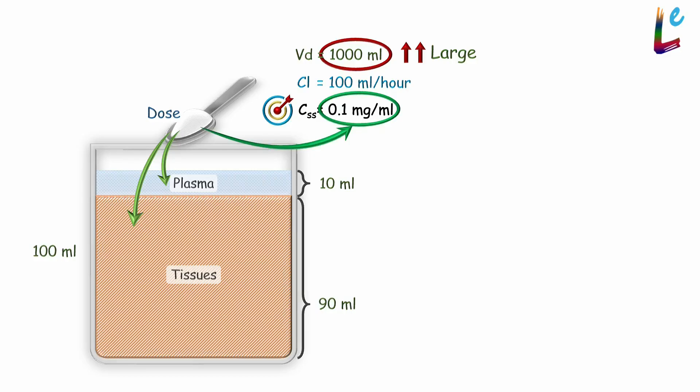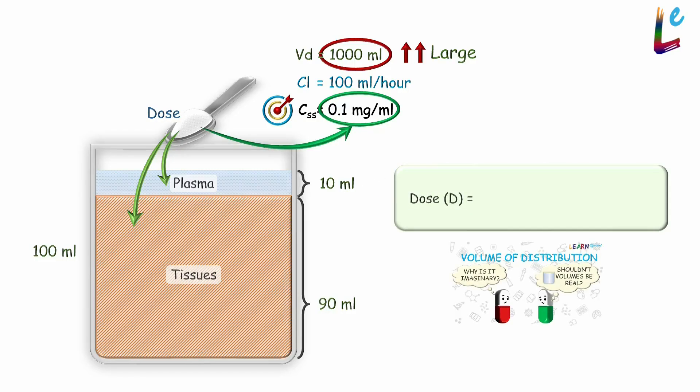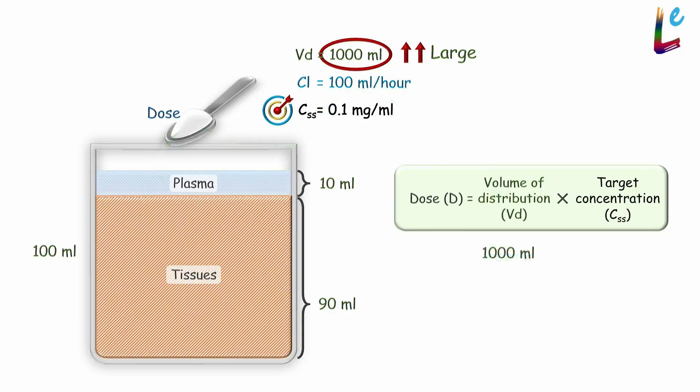We have already seen the equation to calculate this dose in the video on volume of distribution. Dose equals volume of distribution multiplied by target concentration. We know that VD is 1000ml and target plasma concentration is 0.1mg per ml. So dose equals 1000ml multiplied by 0.1mg per ml, which equals 100mg.